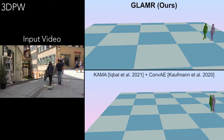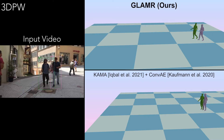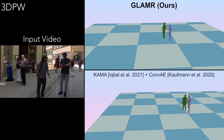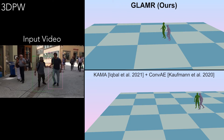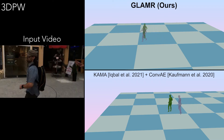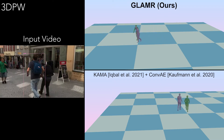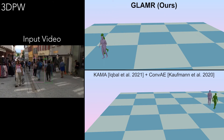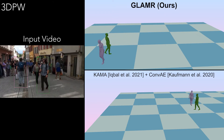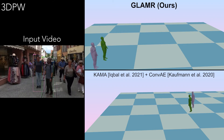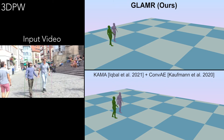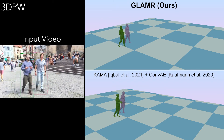We first show results on the 3DPW dataset. Here we compare against a combination of state-of-the-art human mesh recovery and motion infilling methods, as well as SLAM to recover camera poses to convert motions from local to global coordinates. In the input videos, the bounding boxes are used to indicate whether a person is detected and visible. We can see that GLAMR can estimate more smooth and accurate global motions and infill more natural human motions for occluded humans.